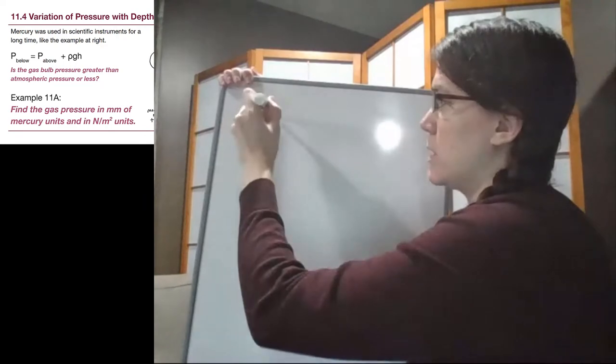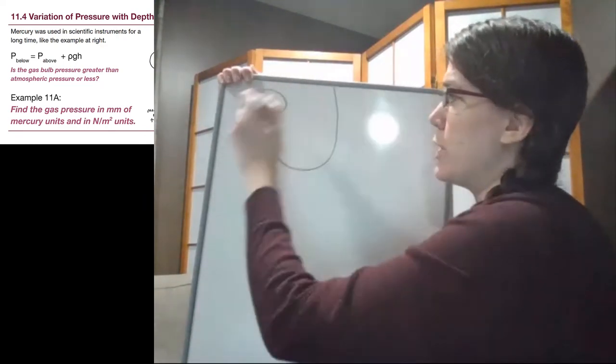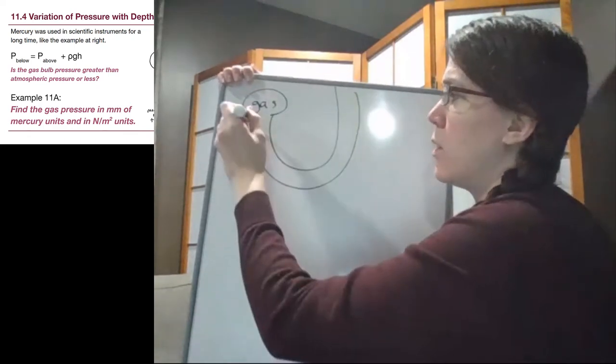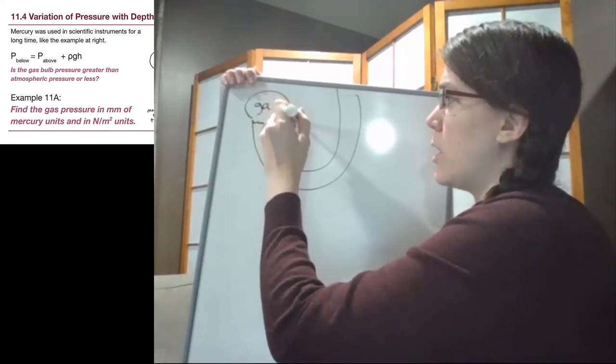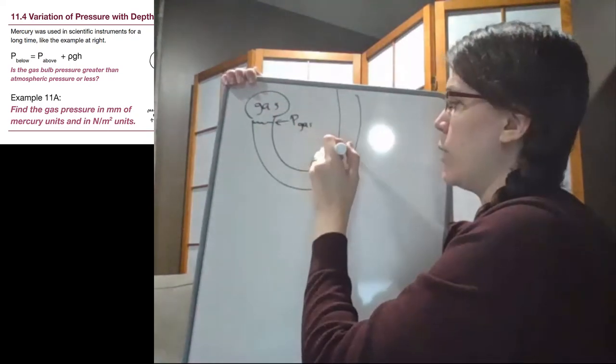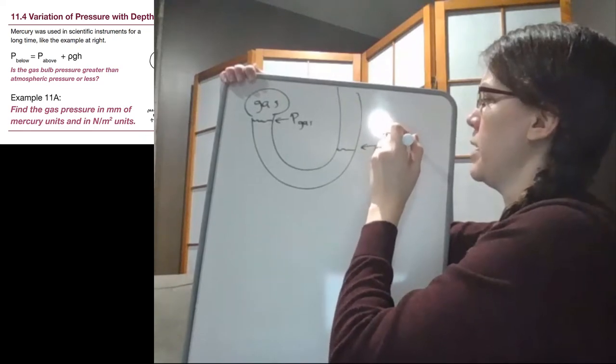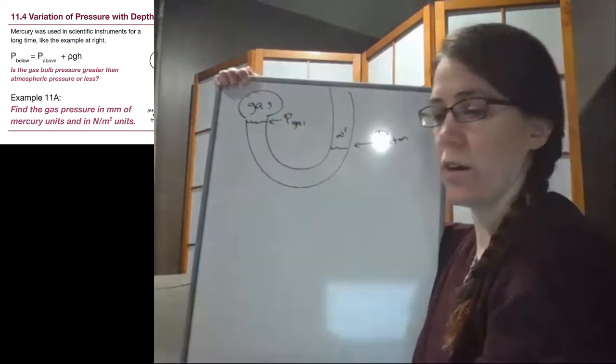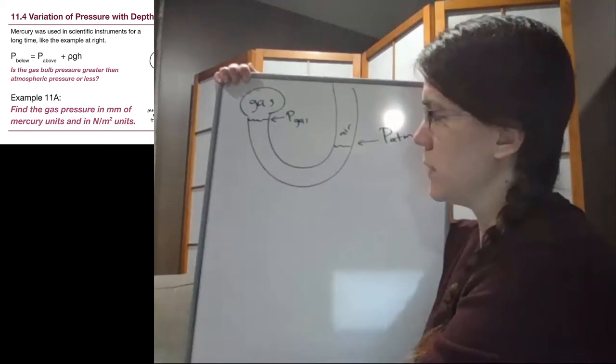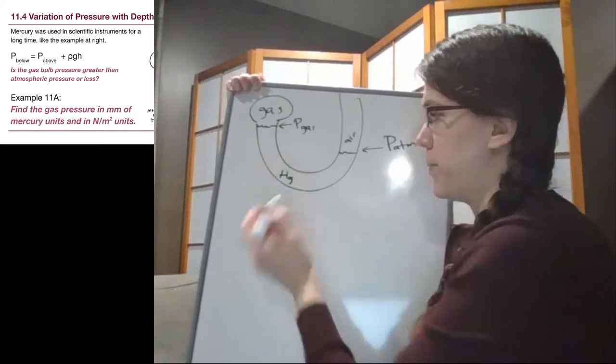And we may see different ones in the future on assignments or quizzes or whatnot. Okay, so let's get back to the situation as it currently stands. We have the gas pressure way up here. That's our gas pressure. And we have the atmospheric pressure way down here. And that's because there's gas above that boundary and there's air above that one. And in between we have the millimeters of mercury, Hg.